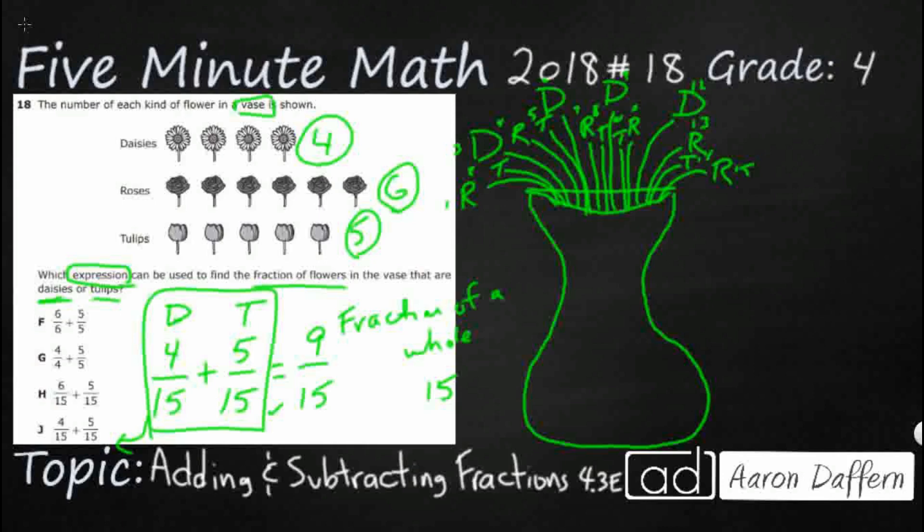So if we wanted to know what was the total, well, we could say nine fifteenths of the flowers are either daisies or tulips, but they don't necessarily ask us for that. That's just how we would add it. They're asking for the expression and it's going to be J, four fifteenths plus five fifteenths.